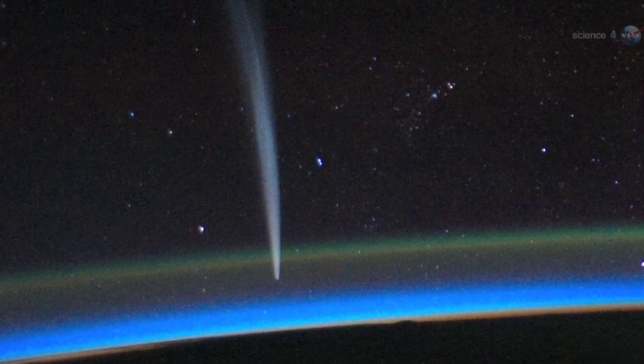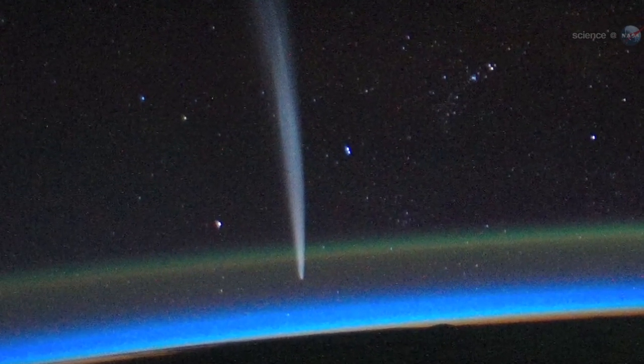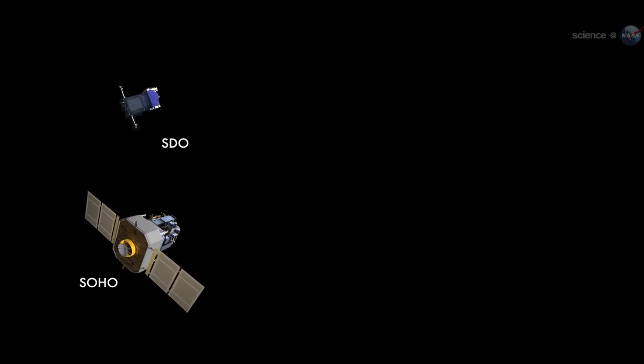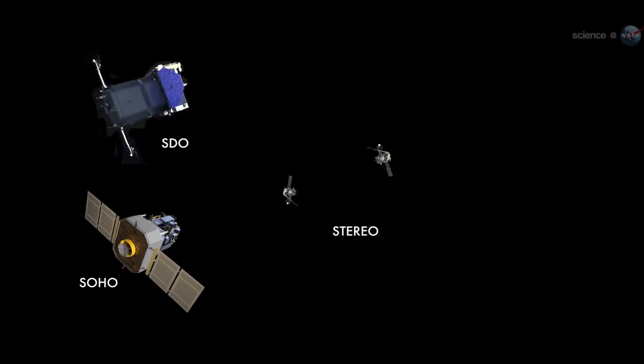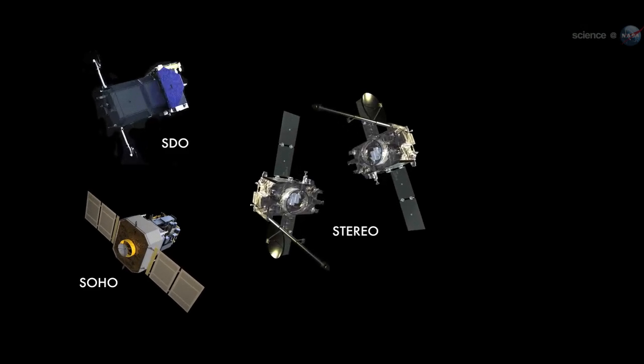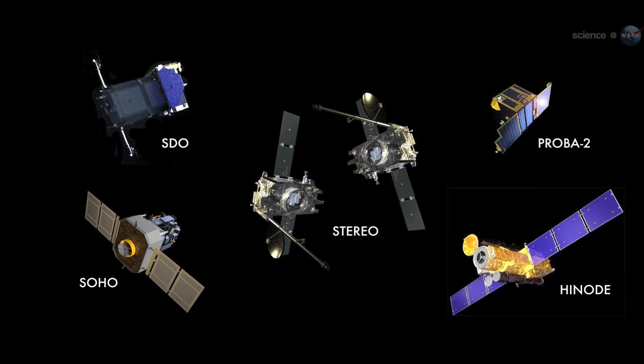An armada of spacecraft including SOHO, the Solar Dynamics Observatory, NASA's twin Solar Terrestrial Relations Observatory probes, Japan's Hinode spacecraft, and Europe's Proba 2 microsatellite recorded the historic event.